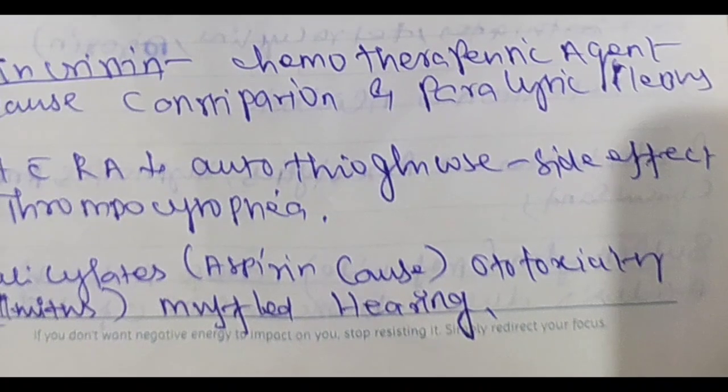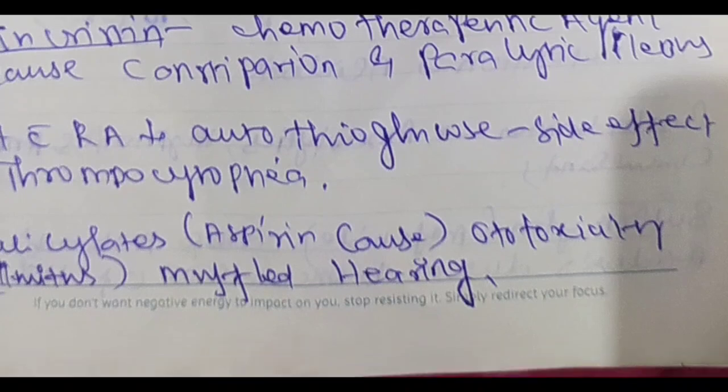Vincristine side effect: thrombocytopenia. Then salicylates — usually aspirin — cause ototoxicity, that is, they cause ototoxicity and muffled hearing. All salicylates are ototoxic.